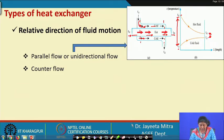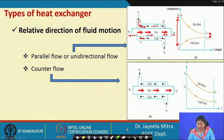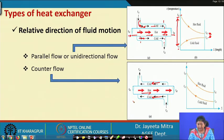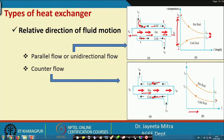In a counter flow heat exchanger, the directions of the cold and hot fluids are opposite. Plotting temperature along the length, T_H1 decreases to T_H2 while T_C1 increases to T_C2. In this configuration, the temperature difference delta_T1 and delta_T2 remain almost similar throughout the length of the heat exchanger.